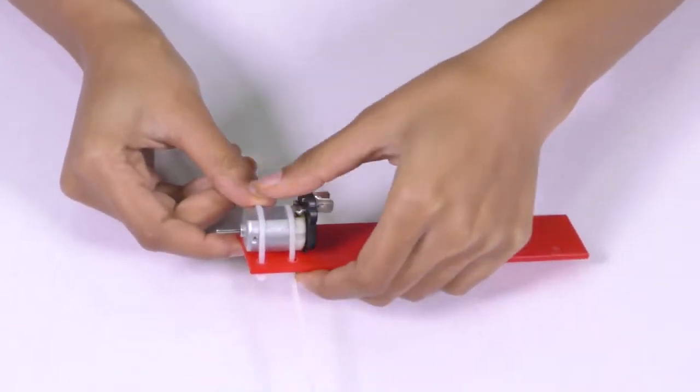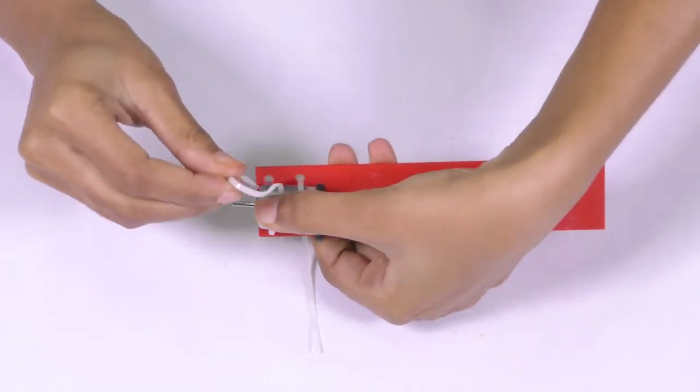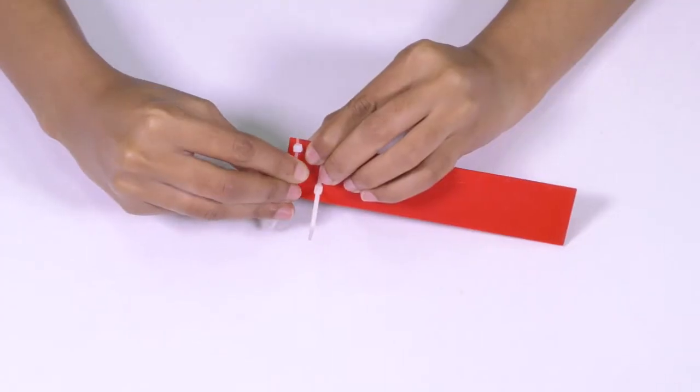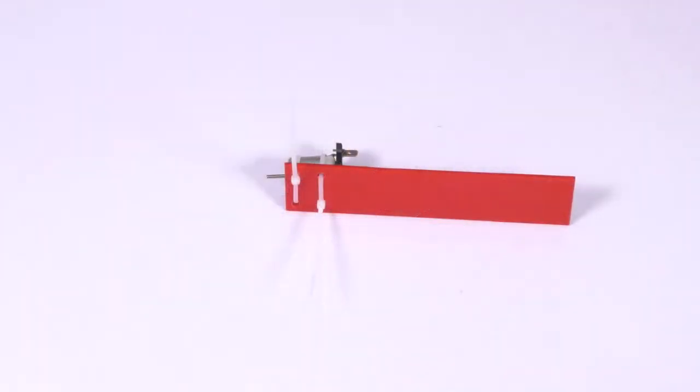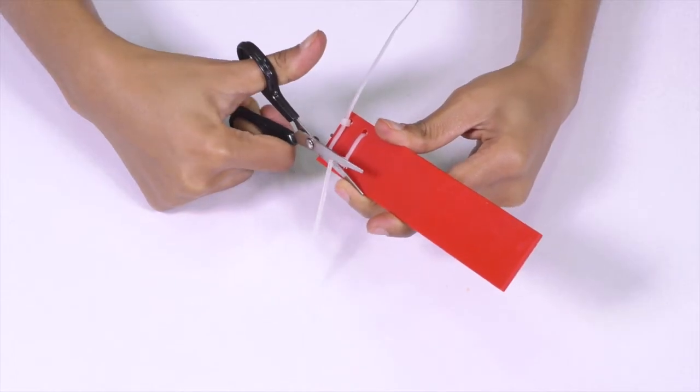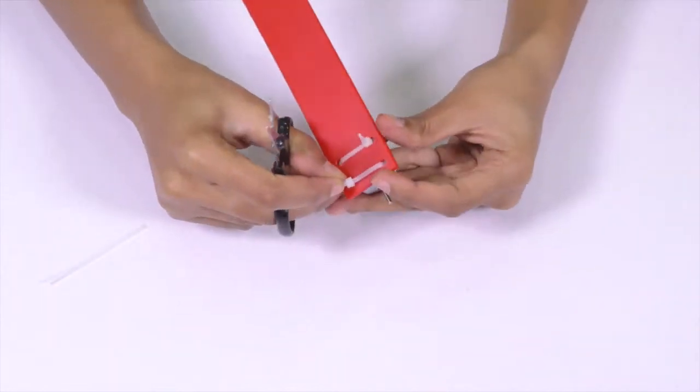Similarly, pass another cable tie through the other two holes and follow the same procedure to fasten the motor tightly to the base strip. Cut off the loose end of the cable tie using scissors.